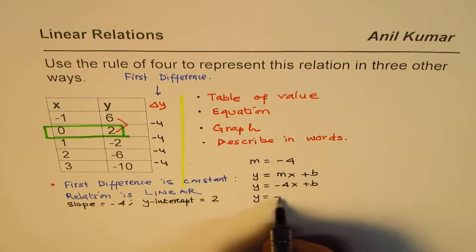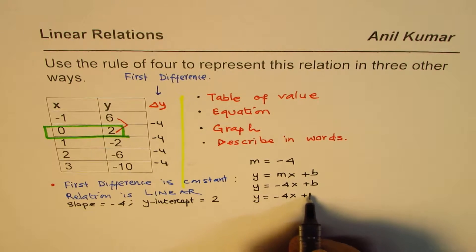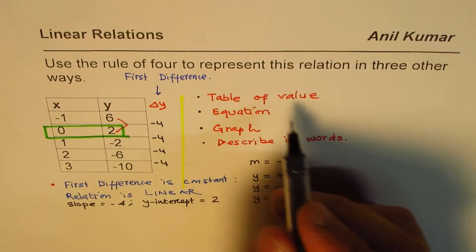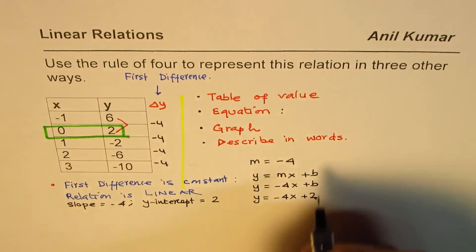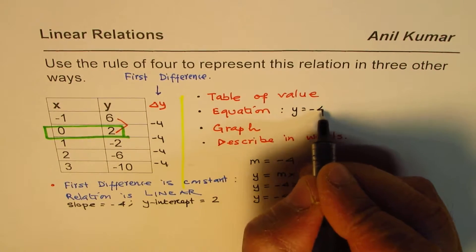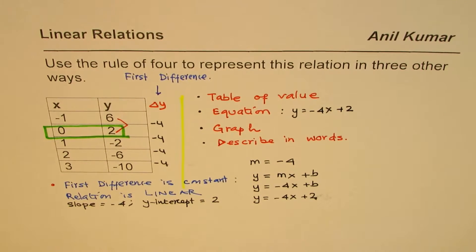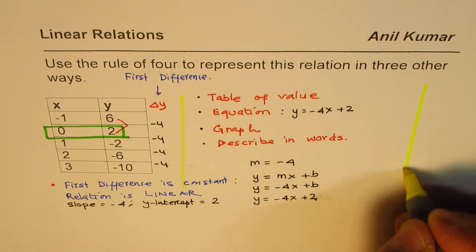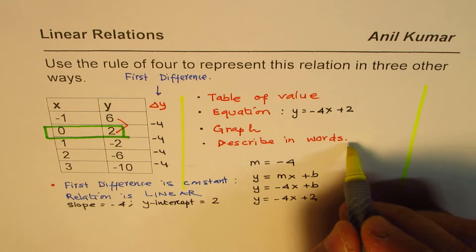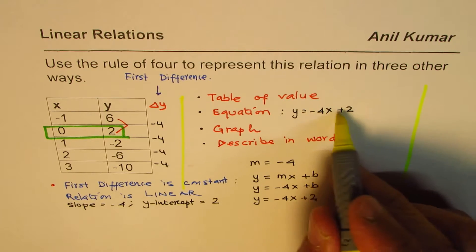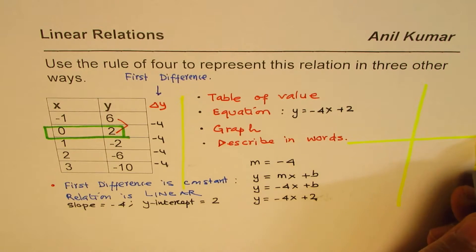So, we could write equation as y equals to minus 4x plus 2. Do you see that? So, that becomes the second way of describing it. And so, the equation is y equals to minus 4x plus 2. Once we have the equation, we can sketch it in the form of a graph. So, let me sketch this equation in the form of a graph.